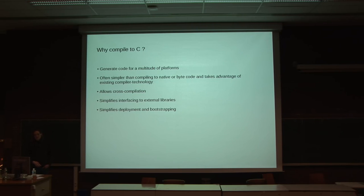Why compile to C? You can use it on many platforms. It's often simpler than compiling directly to native code or byte code, and it takes advantage of existing compilers and the optimizations they provide. You can use it for cross-compilation. External libraries written in C++ or C are easy to interface to, and it simplifies deployment and bootstrapping. If you have something in C, you can always build it up from scratch.